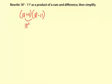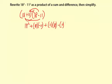18 times 18 is 18 squared. 18 times negative 11. And then plus 11 times 18 for this one inside. And then for the last, it's going to be minus 11 times 11 or 11 squared. So let me clean this up and give it the same notation. 18 squared.